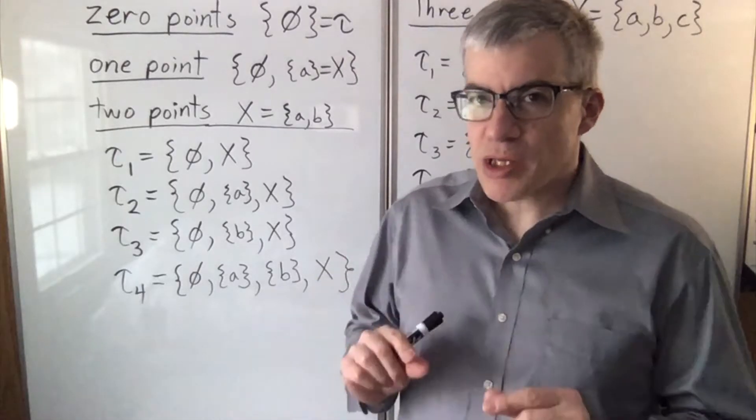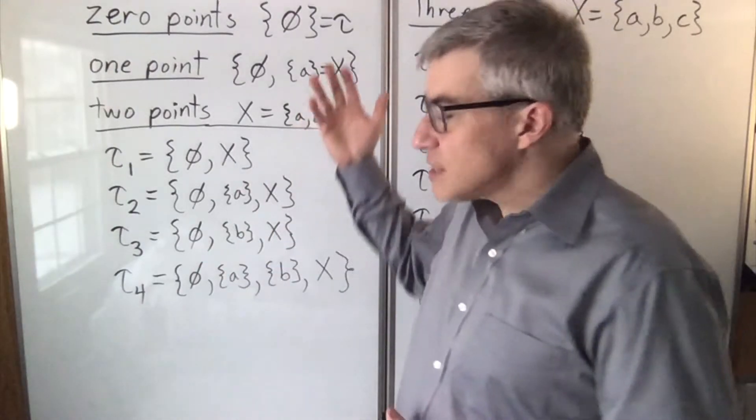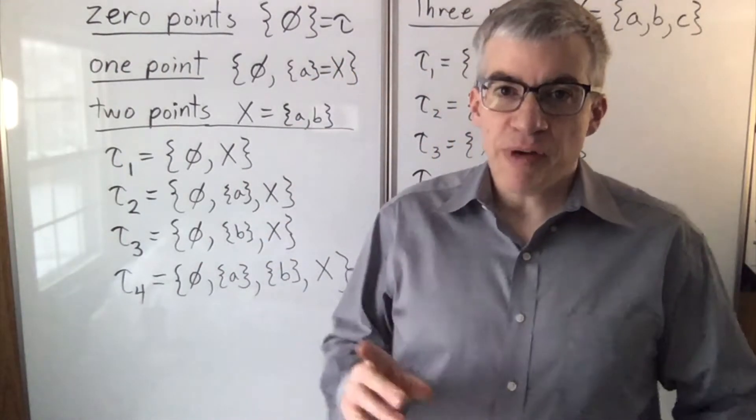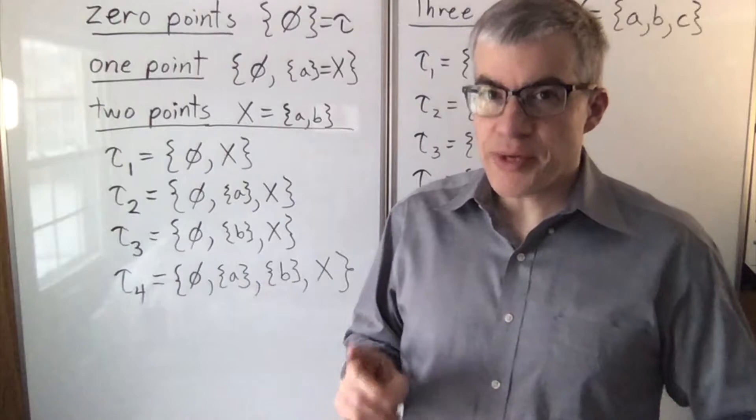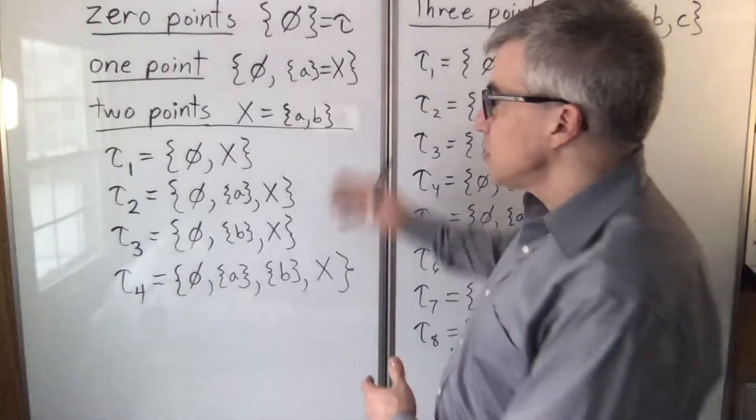To look at the very smallest topologies, we can list out the examples. One thing we find is we really need to change the notation, because here's the standard notation.